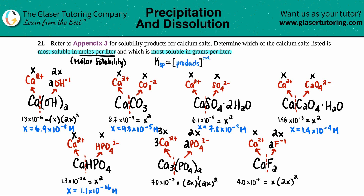For calcium phosphate, 3³ is 27 and 2² is 4, so 27 × 4 = 108. We take 7.0 × 10⁻⁷ divided by 108, then raise to the one-fifth power — there are five total x's — giving x equals 2.3 × 10⁻² M. For calcium fluoride, we take 4.0 × 10⁻¹¹ divided by 4 and cube root it, giving x equals 2.2 × 10⁻⁴ M.